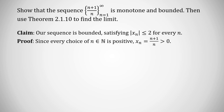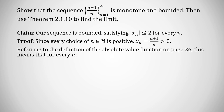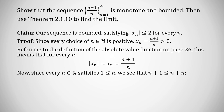Since every n is positive, x_n = (n+1)/n is also positive, so the absolute value of x_n equals x_n = (n+1)/n. Since every natural number n satisfies n ≥ 1, we have n+1 ≤ n+n = 2n, and dividing by n gives (n+1)/n ≤ 2. This holds for every natural number n, so the claim is proved and our sequence is bounded.